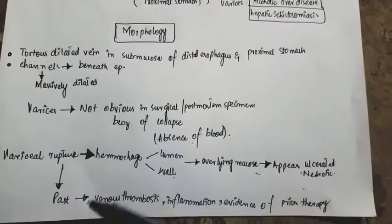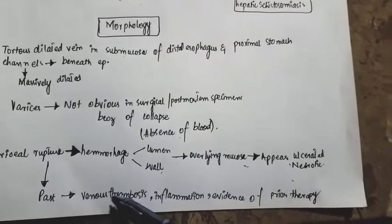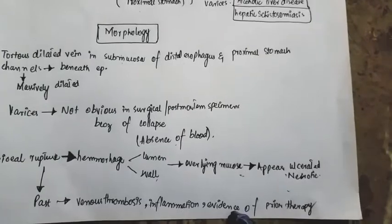If the variceal rupture has taken place in the past, it will cause venous thrombosis and inflammation, or it will give evidence of prior therapy.